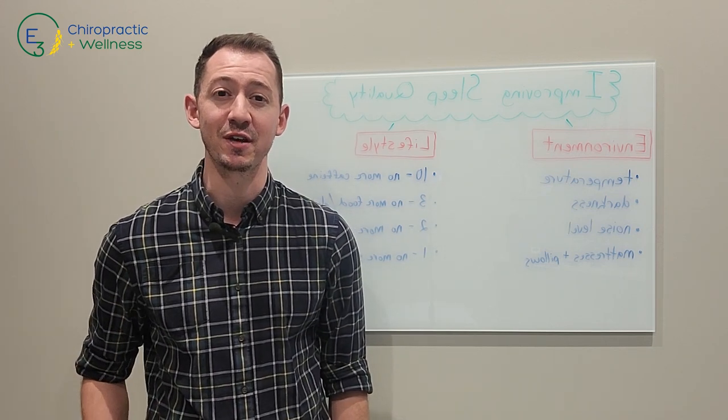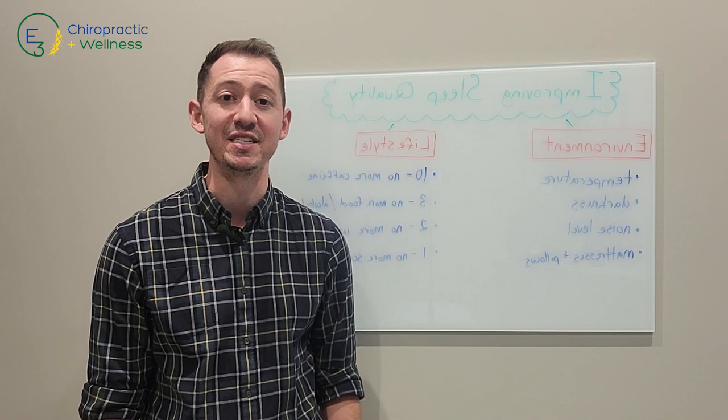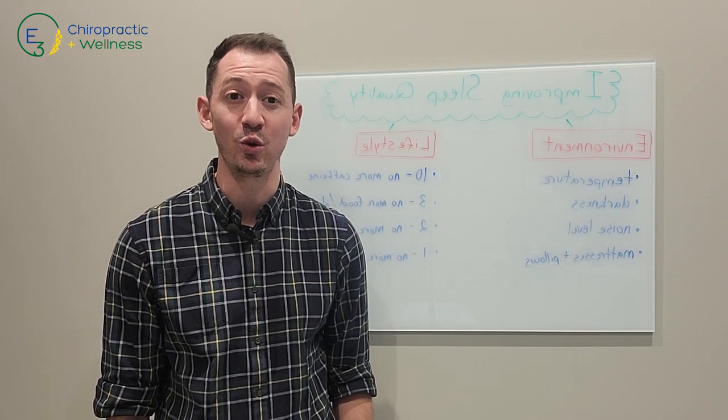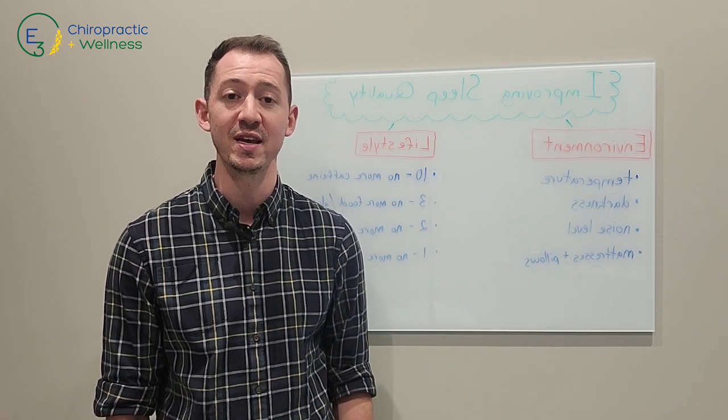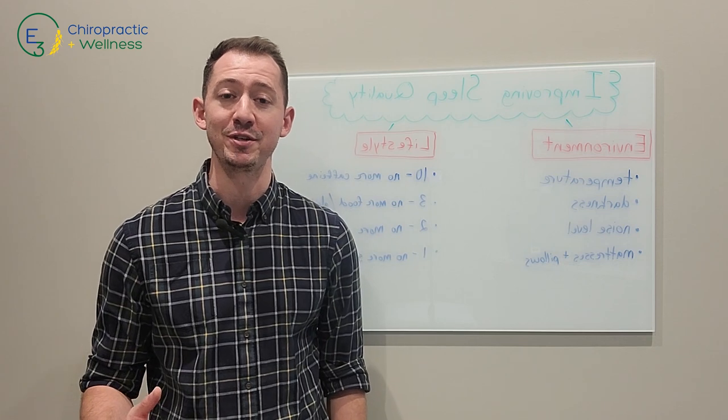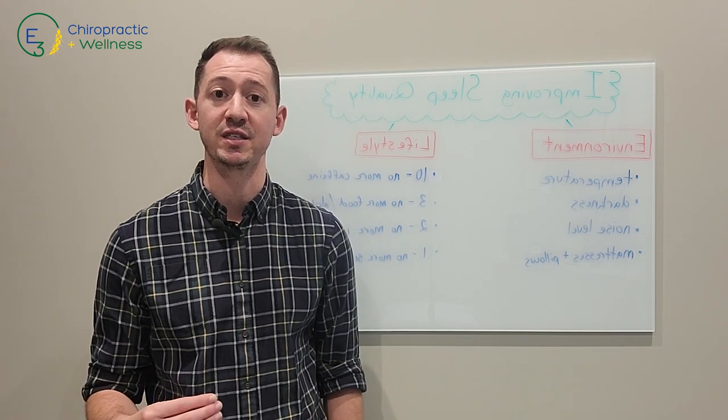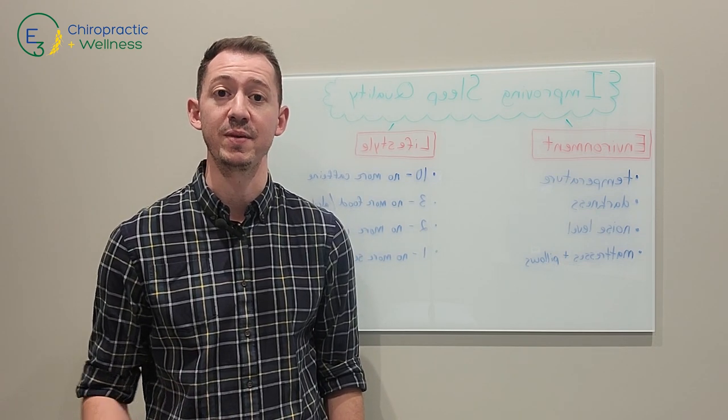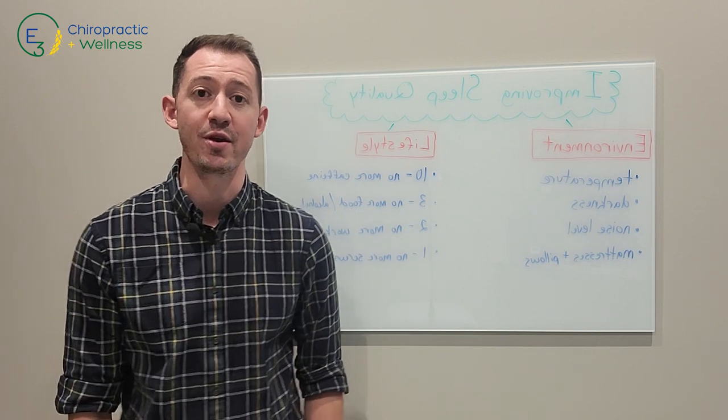Ideal sleeping temperatures are somewhere between 16 and 18 degrees Celsius, which is a little bit colder than most people keep their houses during the day. That drop in temperature actually helps to kick start our sleep system so that we feel a little bit sleepy and we end up sleeping better throughout the night.